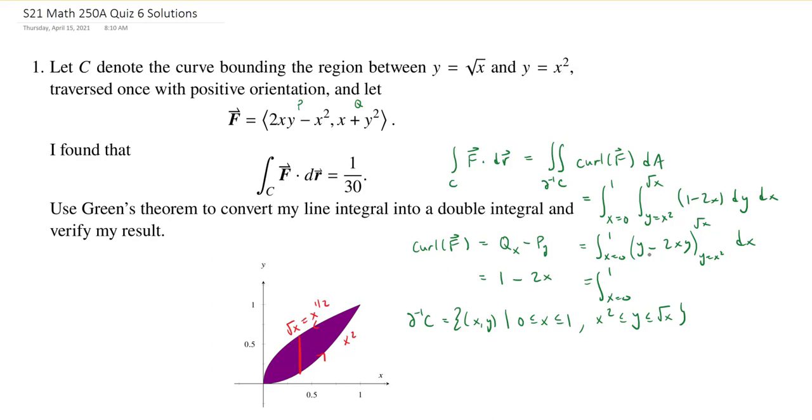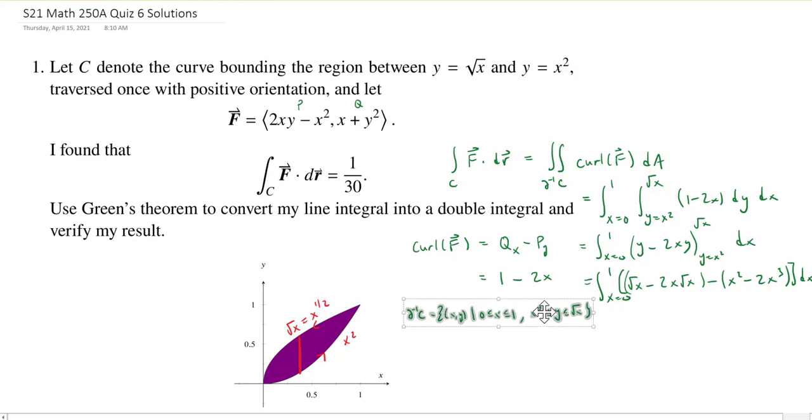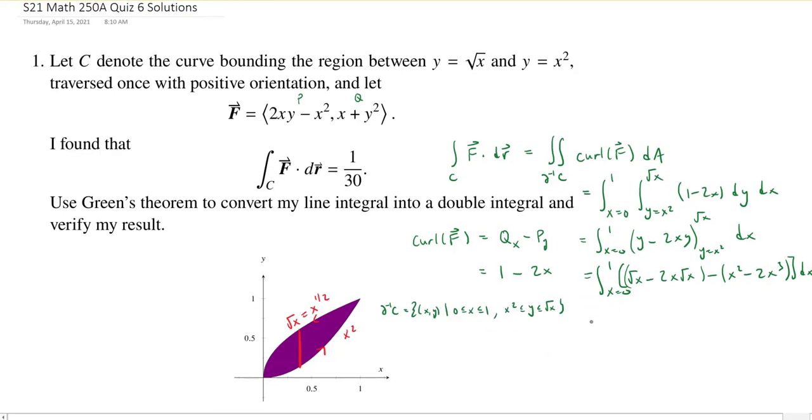At the square root of X, we're going to get the square root of X minus 2X times the square root of X. Then we're going to subtract what happens at X squared. So we'll get X squared minus 2X times X squared, that'll be 2X cubed. And then all of this will be by dx. Since I'm going to be integrating, I'm going to put everything in terms of powers here. So we'll have X to the 1 half minus 2X to the 3 halves minus X squared plus 2X cubed dx.